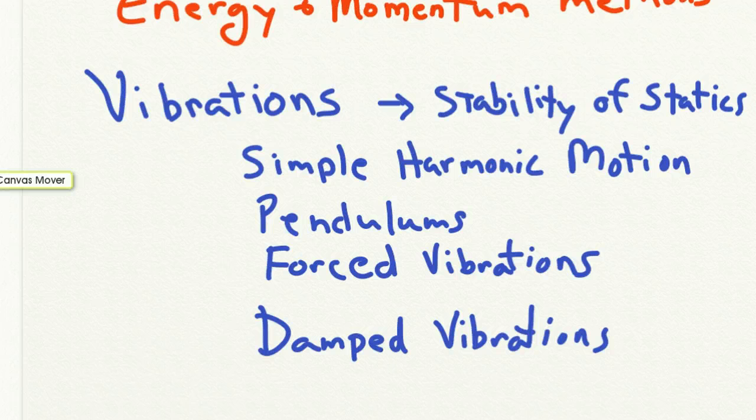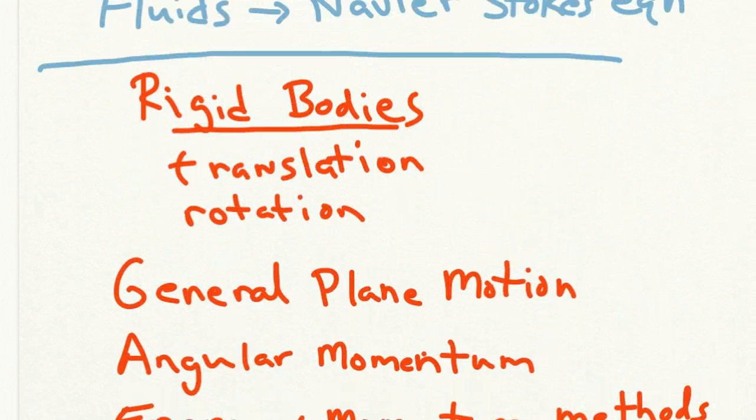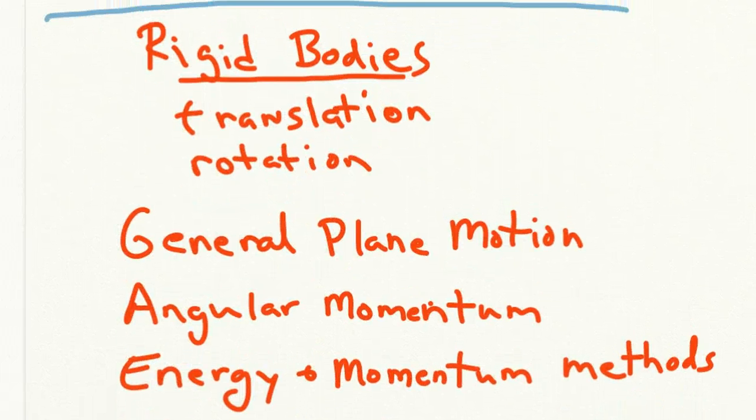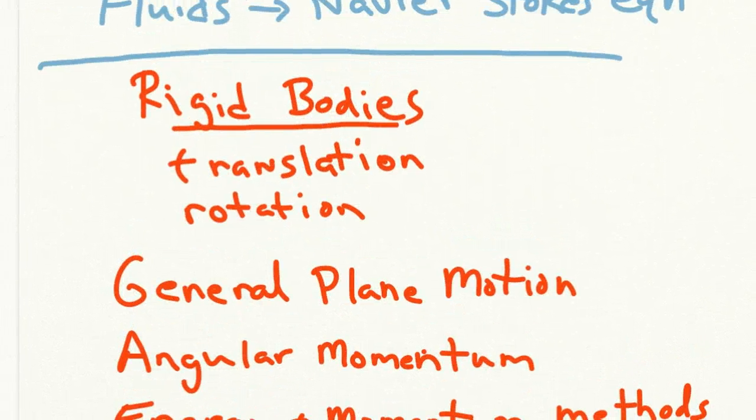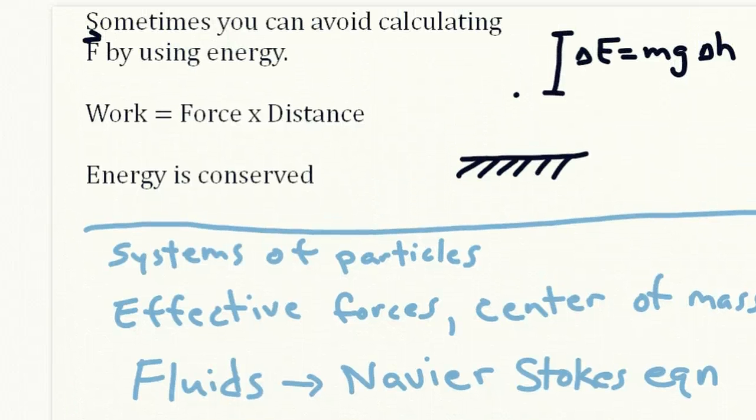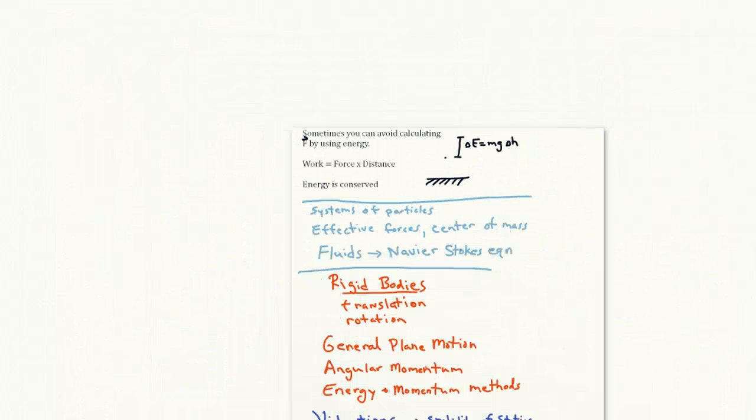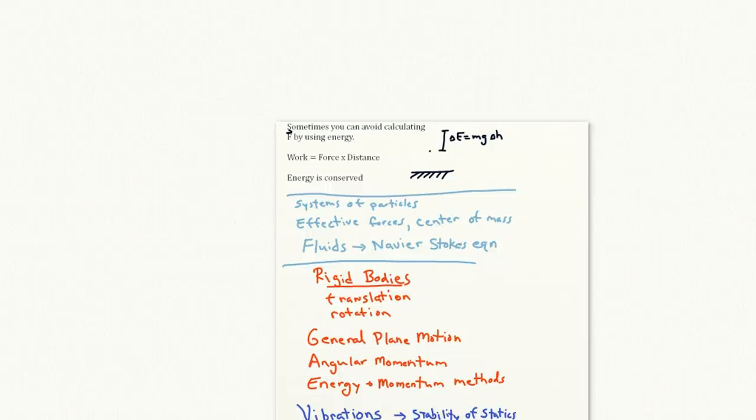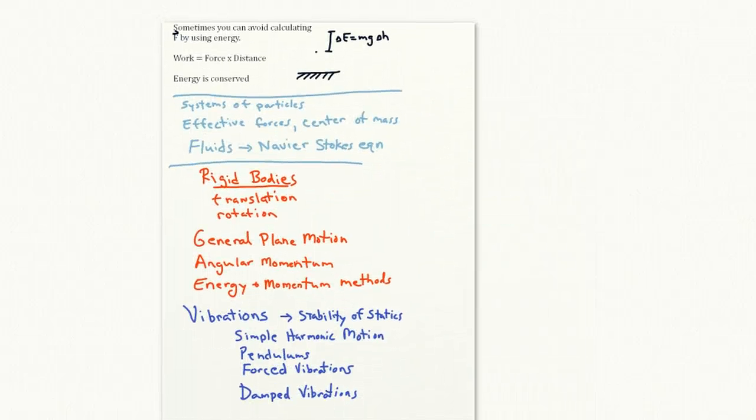So that's the very basic outline of the course. We'll start with different methods of solving F equals ma for particles.